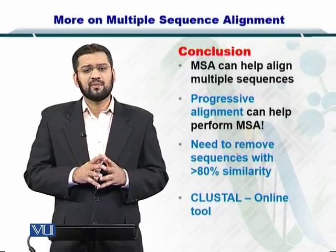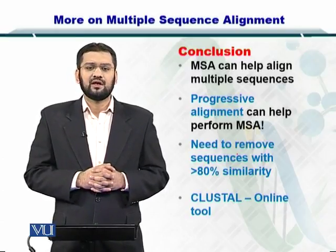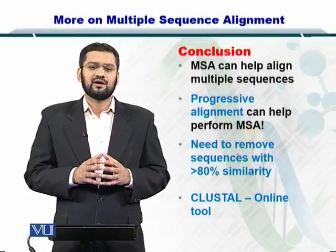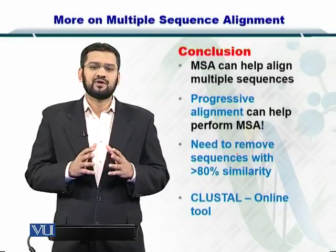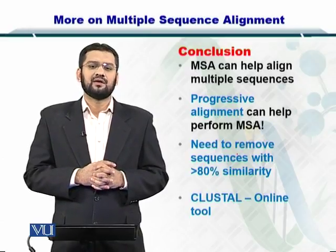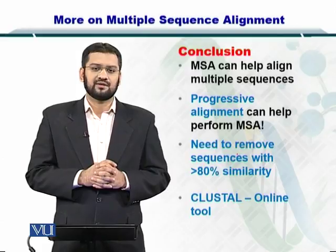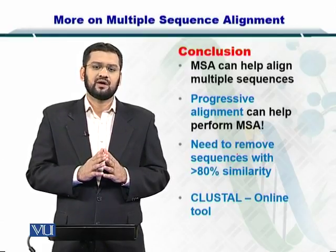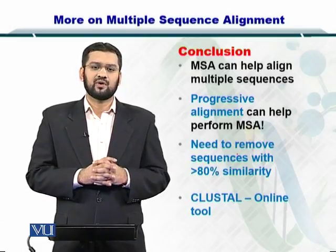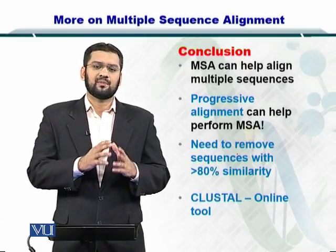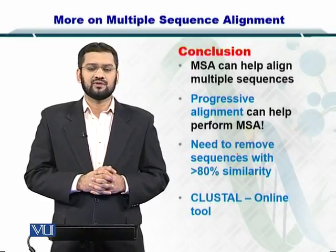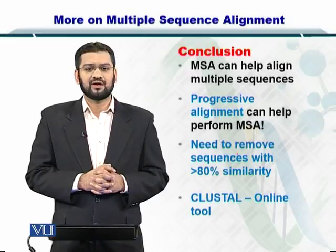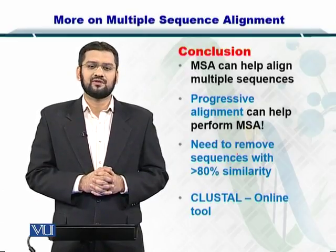An important thing to remember is that you should only consider sequences that are divergent or different from each other by less than 80%. If two sequences are more than 80% similar, you don't want to include both, as this will create a bias. Lastly, ClustalW is an online tool that can help you perform multiple sequence alignment.